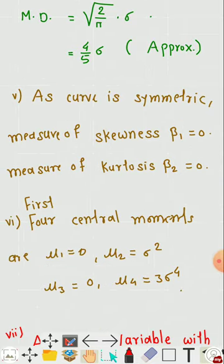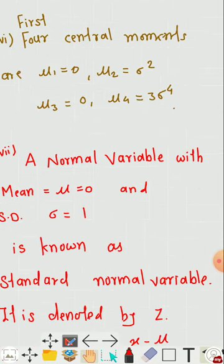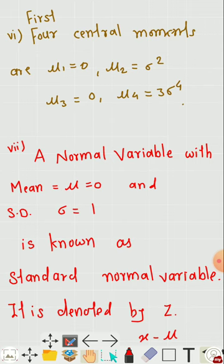As the curve is symmetric, the measure of skewness β₁ = 0 and the measure of kurtosis β₂ = 0. The first four central moments are: μ₁ = 0, μ₂ = σ², μ₃ = 0, and μ₄ = 3σ⁴.